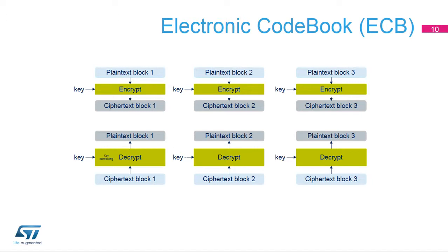ECB is the simplest form of operation. There are no chaining operations and no special initialisation stage. The message is divided into blocks, and each block is encrypted or decrypted separately. For an ECB decryption, a key for the first round of decryption must be derived from the key of the last round of encryption. This is why a complete key schedule of encryption is required before performing the decryption.